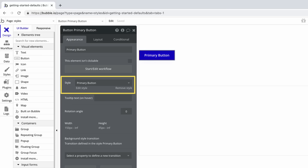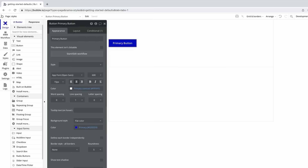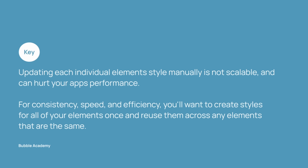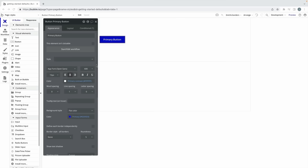When you drag an element on the page, you may have noticed a default style was applied. Each new application you start comes with preset styles like this for every element. The style saves the visual look of the element and allows you to name it so you can create a style guide for your app. If you remove the style from an element, whatever style was applied will now be directly editable on the element instead. As your app becomes more complex, you'll find that updating each individual element's style manually is not scalable, and it hurts your app's performance. For consistency, speed, and efficiency purposes, you'll want to create styles for all of your elements once and reuse them across any elements that should have the same appearance.